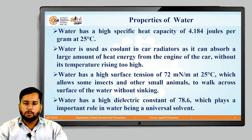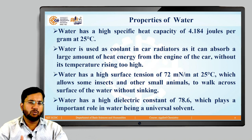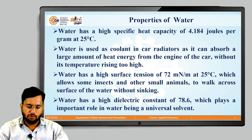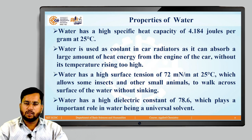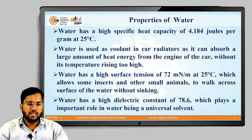Water has a high specific heat capacity of 4.184 joules per gram at 25°C. Specific heat capacity is the amount of heat required to raise the temperature of unit mass of a substance through 1 degree Celsius, which indicates that water has a high tendency to absorb heat and will also require more time to cool down. Therefore, water is used as a coolant in car radiators, as it can absorb a large amount of heat energy from the engine without its temperature rising too high. Water also has a high surface tension of 72 milli-Newton per meter at 25°C, which allows some insects and small animals with minimum weight to walk across the surface of water without sinking. Water has a high dielectric constant of 78.6, which plays an important role in water being a universal solvent.